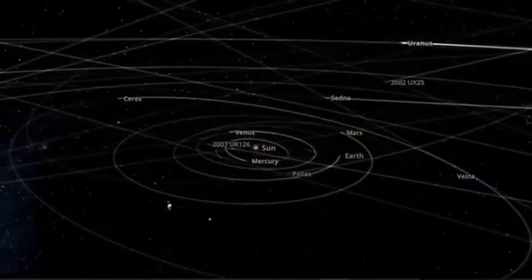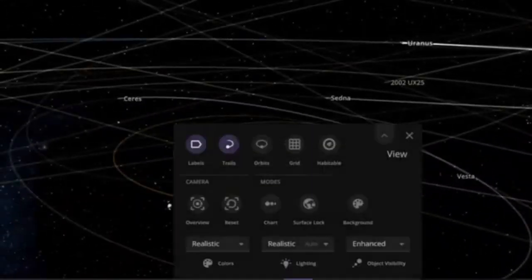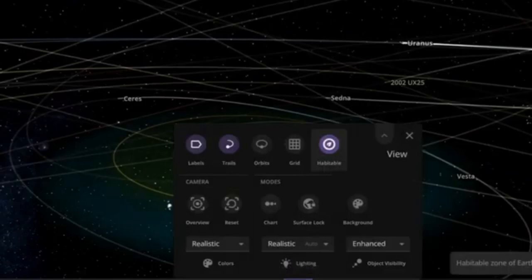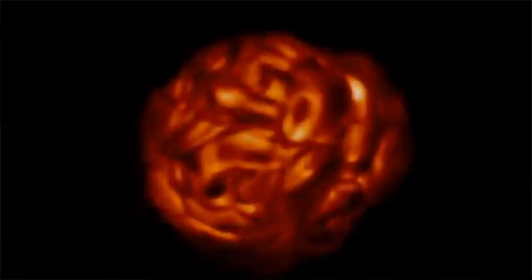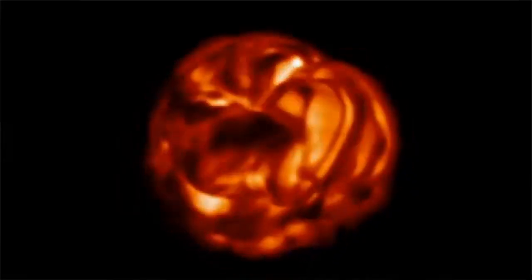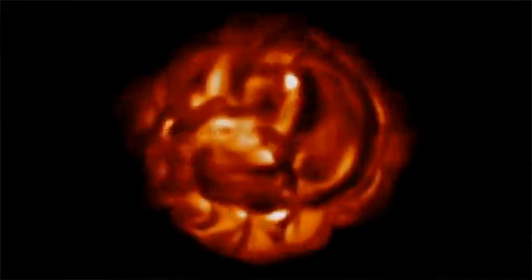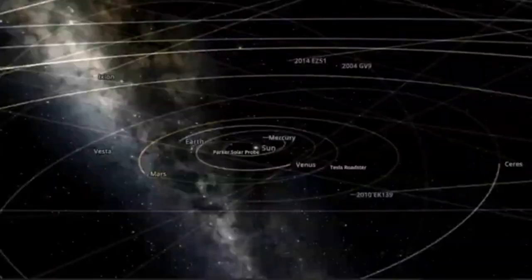Astronomers have just seen something no one ever has, the hidden companion of Betelgeuse. But its discovery comes with a chilling twist, it's in serious danger. After a long wait, astronomers have finally seen the stellar companion of the famous star Betelgeuse.